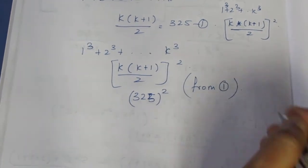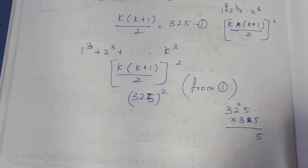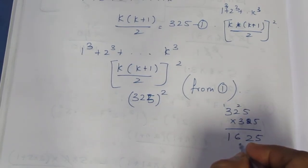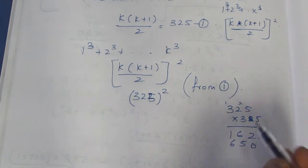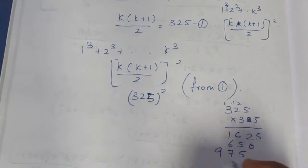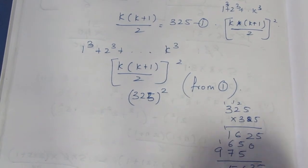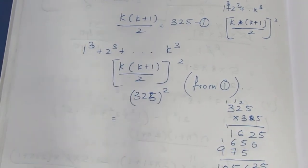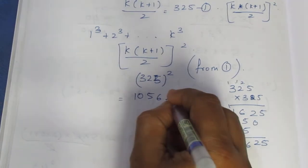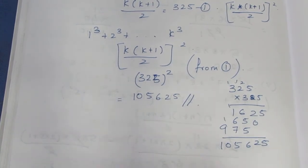Now let's multiply 325 × 325. Working through the multiplication: 5×5 is 25, carry 2; 5×2 is 10 plus 2 is 12; 5×3 is 15 plus 1 is 16. Then 2×5 is 10, 2×2 is 4, 2×3 is 6. Then 3×5 is 15, 3×2 is 6, 3×3 is 9. Adding up the partial products gives 105625.